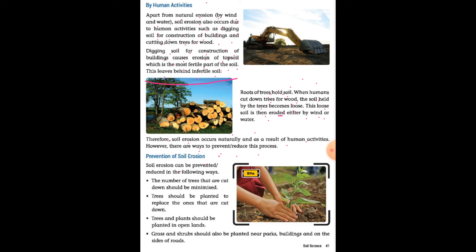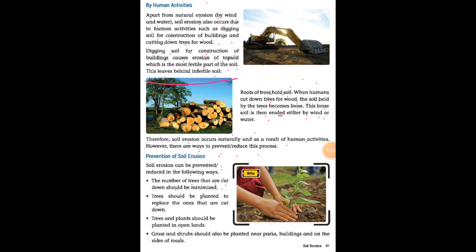Prevention of soil erosion: the number of trees that are cut down should be minimized. We need to prevent soil erosion. If we are cutting one tree then we should grow five plants in its place — trees should be planted to replace the ones that are cut down.